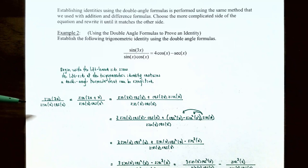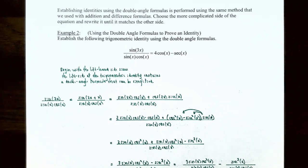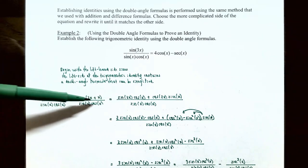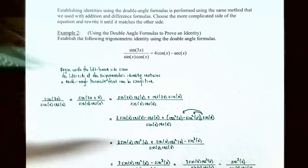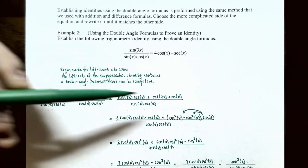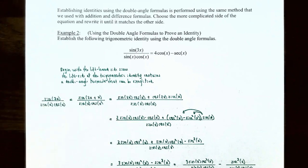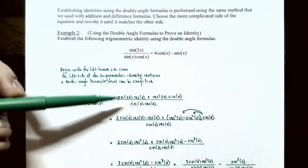We want to establish that sine(3x) divided by sine x cosine x equals 4 cosine x minus secant x. Starting with the left-hand side, we rewrite sine(3x) as sine(2x + x) and apply the addition formula: sine(2x)cosine(x) plus cosine(2x)sine(x), all divided by sine x cosine x.